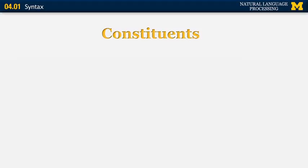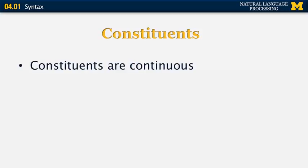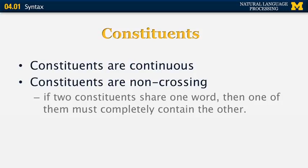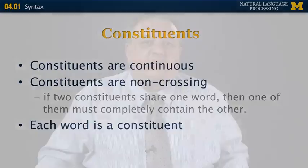One of the fundamental concepts in syntax is called a constituent. Constituents are continuous, non-crossing pieces of text. If two constituents share any word at all, then one must completely contain the other. Each word is a constituent in itself. Any sequence of words that is part of the same constituent can be replaced with any other member of that constituent type and still form a grammatically correct sentence. For example, she, Samantha, and the cat can all be considered noun phrases — one of the simplest types of constituents.